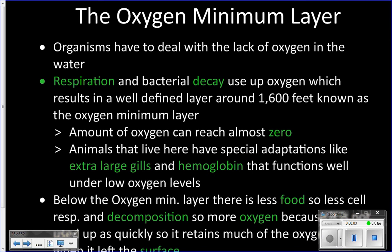The oxygen minimum layer is also found in the mesopelagic zone at about 1,600 feet. It is a layer of the ocean where there is pretty much no oxygen, which is why it gets its name—the oxygen minimum layer. It literally has pretty much zero oxygen.